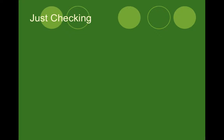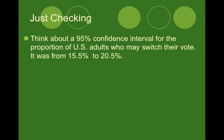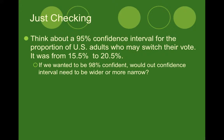Let's think about what a margin of error actually is and how it affects our interval. Consider a 95% confidence interval for the proportion of U.S. adults who may switch their vote — we said it was from 15.5% to 20.5%. If we wanted to be 98% confident, would our confidence interval need to be wider or more narrow? Because we're more confident, our margin of error is going to have to increase, and by increasing our margin of error, our interval will have to be wider.